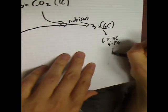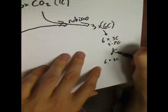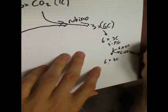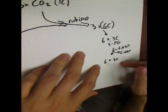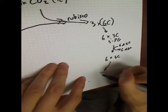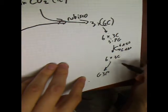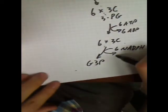This 3-PG is then converted into six molecules of another three-carbon compound — 1,3-bisphosphoglycerate — in a reaction that uses six ATPs, producing six ADPs. These molecules are then converted in another reaction into glyceraldehyde-3-phosphate, G3P — six of them — and this reaction uses six NADPHs, giving us back six NADPs.